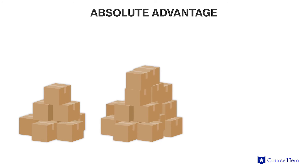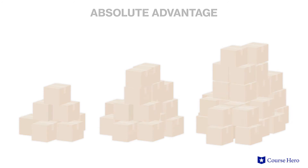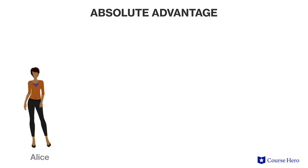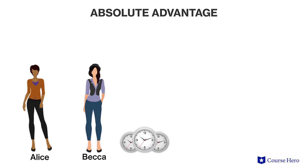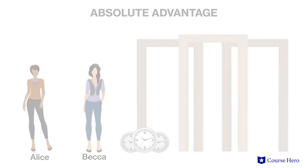Absolute advantage is focused on who can produce the most items, not necessarily who can produce items better than someone else. Let's start with an example to see how to determine absolute advantage. Alice and Becca can each build clocks and door frames. We'll assume that each person uses the exact same raw materials to build clocks and door frames, and the final products are of equal quality. The only difference is the time it takes for each to make the product.